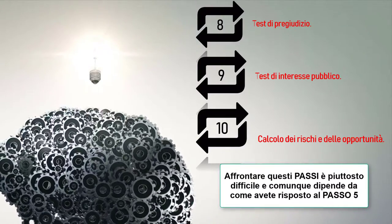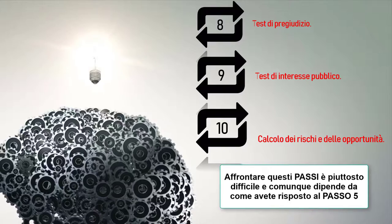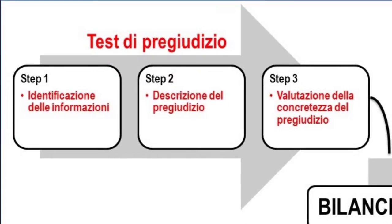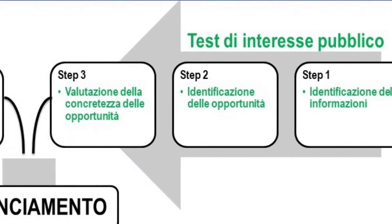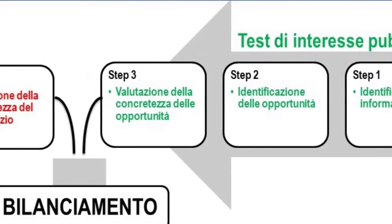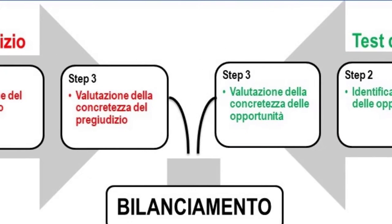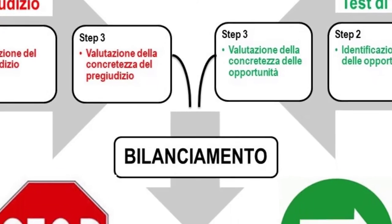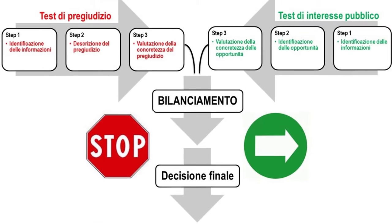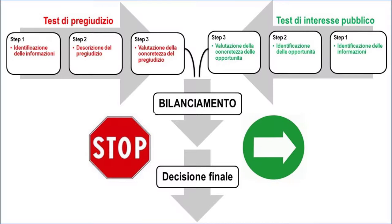Il test di pregiudizio valuta la presenza e la concretezza dei pregiudizi e degli interessi privati. Poi il test di interesse pubblico valuta la presenza e la concretezza delle opportunità di conoscere, cioè la presenza di un interesse diffuso ulteriore rispetto a quello del richiedente, in linea con gli scopi della normativa. Infine il calcolo dei rischi e dell'opportunità, cioè il controbilanciamento tra gli interessi in competizione.